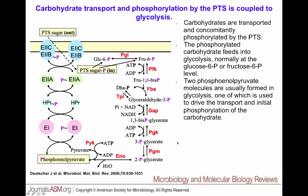This PTS mechanism is prokaryote-specific and does not happen in eukaryotes. So the phosphorylation and transport of glucose across the membrane doesn't require the hexokinase that we discussed in glycolysis for eukaryotes.